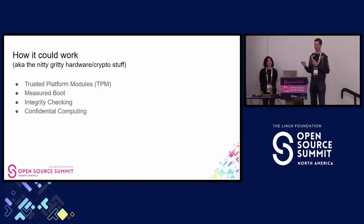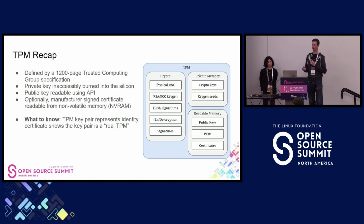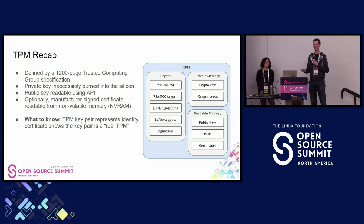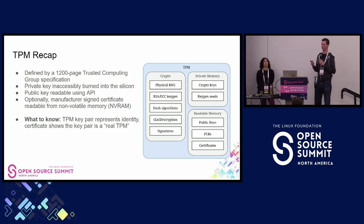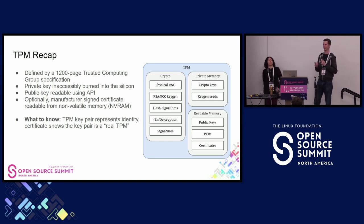TPMs — trusted platform modules — are defined by a 1,200-page specification from the TCG; they are complicated and I'll simplify without being entirely incorrect. An interesting property of TPMs is that they have a key pair burned into the silicon. The private key is inaccessible without physical access to the TPM and an electron microscope. The public key is readable via an API from the TPM. Typically, TPMs include a manufacturer-signed certificate for that public key, representing that it belongs to a real TPM. Assuming you trust the manufacturer to handle their private key properly, you can trust them to certify that this public key represents a real TPM.